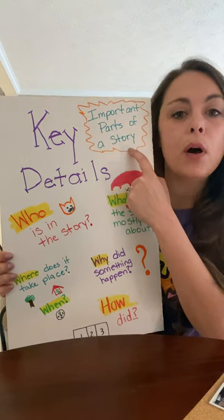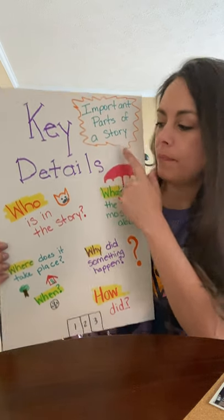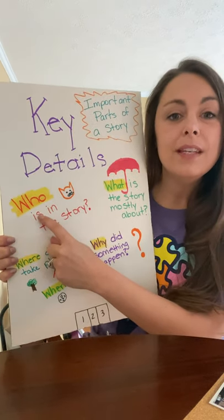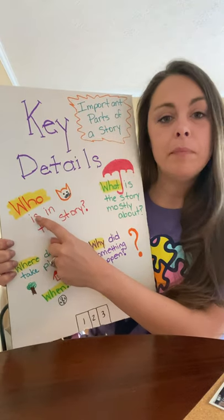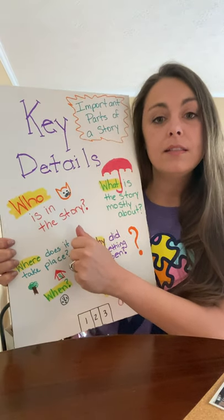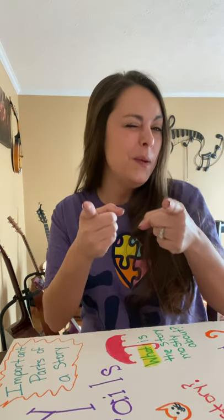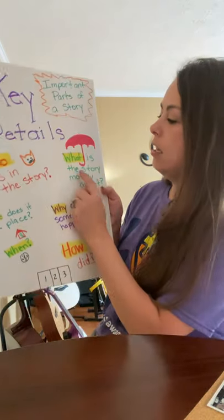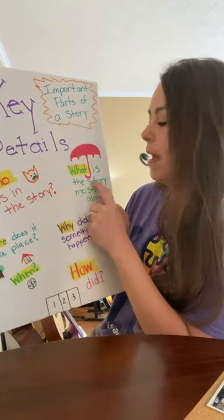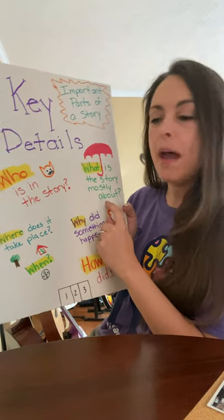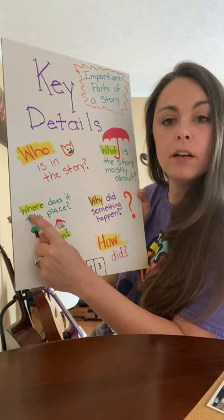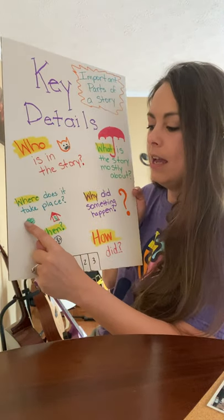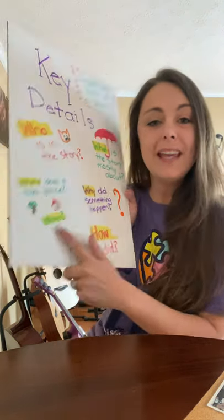Key details are important parts of the story. For example: who is in the story? In my class, we say the character is who the story is about. What is the story about? What's it mostly about? Where does it take place? And when does it take place? That's called the setting.